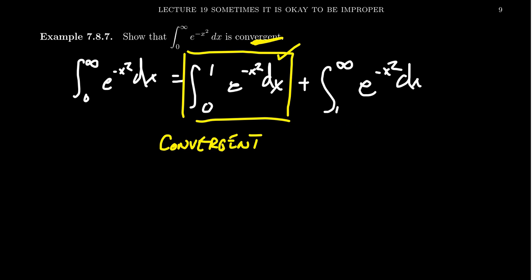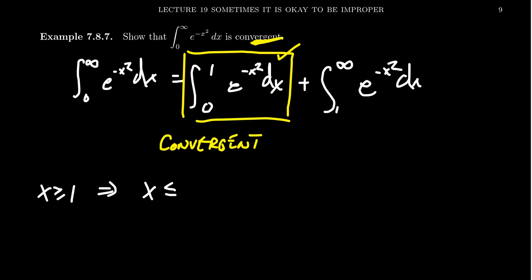Although I don't know how to find an elementary antiderivative for e to the negative x squared, what I can do is the following comparison. On this interval from one to infinity, we're assuming that x is greater than or equal to one. So if x is greater than or equal to one, this implies that x is less than x squared — that's actually why we had to kick the can down to one. And therefore, if you multiply both sides by negative one, negative x is greater than or equal to negative x squared. Again, this is on the assumption that x is greater than one.